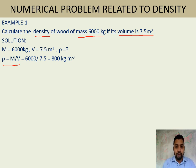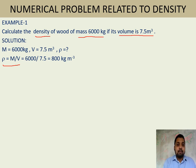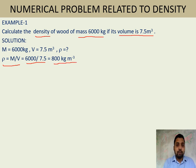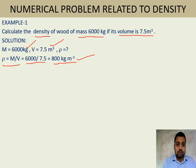In the calculation, we put in the values: mass = 6000 and volume = 7.5, so density = 6000 / 7.5 = 800 kg/m³. The unit is kg/m³ because the unit of mass is kg and the unit of volume is m³. So the answer is 800 kg/m³.